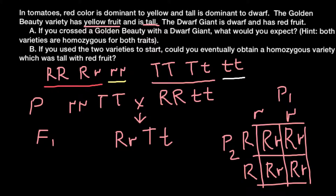Now we can answer Question A: what phenotype would we expect? Since R is dominant, Rr gives red fruit. Since T is dominant, Tt gives a tall plant. So all F1 generation plants will be tall and will have red fruits.